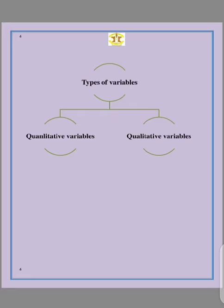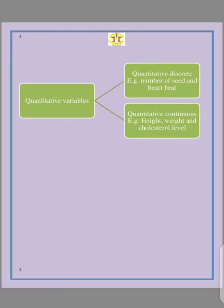A variable could be quantitative or it could be qualitative. It is quantitative if you can count it or measure it. It is qualitative if you can rank it or assess the severity of it. Let's look at them individually.